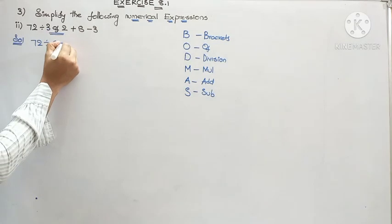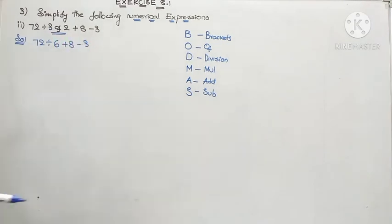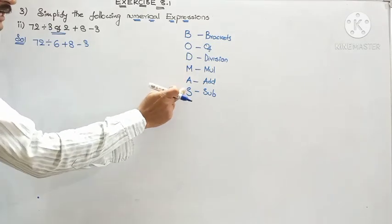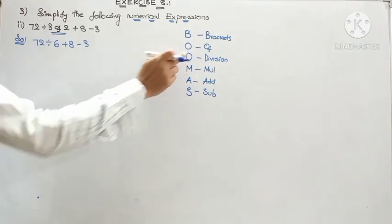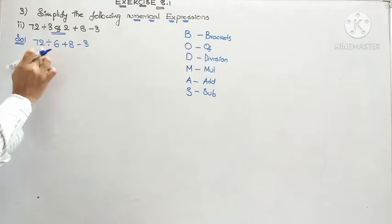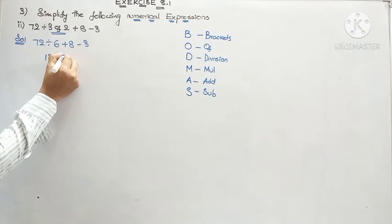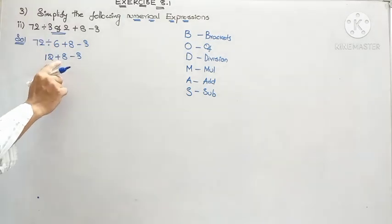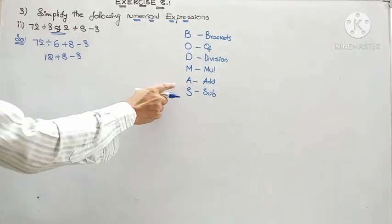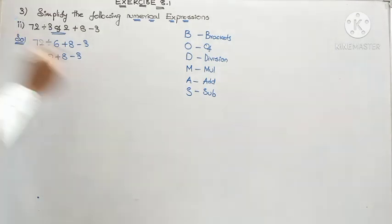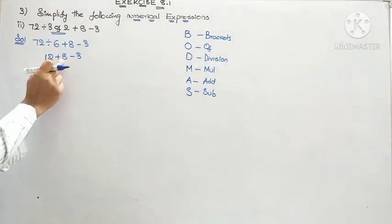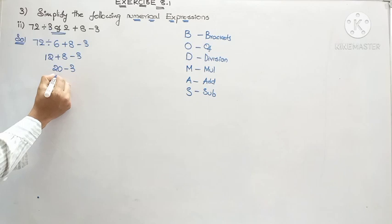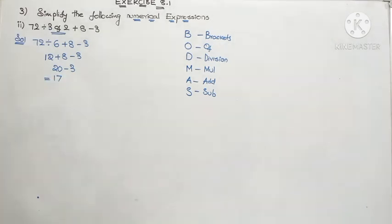The left-over terms with their signs are: + 8 - 3. Now we have division, addition, and subtraction remaining. Division comes first: 72 ÷ 6 = 12, giving us 12 + 8 - 3. Now addition comes before subtraction: 12 + 8 = 20, and the left-over term is minus 3. So 20 - 3 gives us 17. I hope you are able to follow, children.